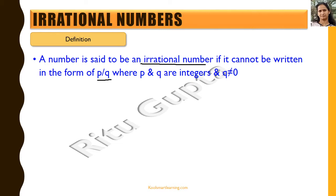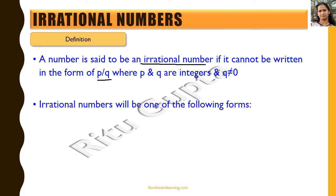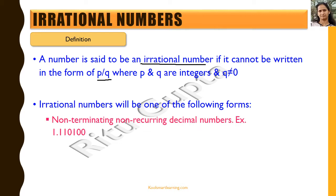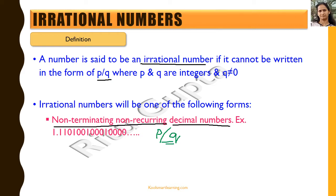So all the real numbers which are not rational numbers are irrational numbers. Irrational numbers will be of the following forms. Any number which is non-terminating, non-recurring — a decimal number of the type 1.1101001001 and so on. This cannot be represented in the form of p by q, which means it is an irrational number.